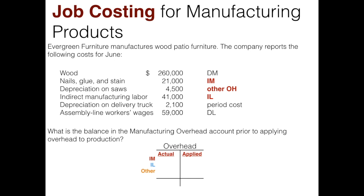Drawing that T-account with our list of overhead items — indirect materials, indirect labor, and other overhead — and inputting them, we find that the actual overhead, or the balance in overhead prior to applying overhead to production, is $66,500. In the future we will calculate the applied amount that goes into work in process, compare it with the actual amount of $66,500, and arrive at our under- or over-applied overhead.